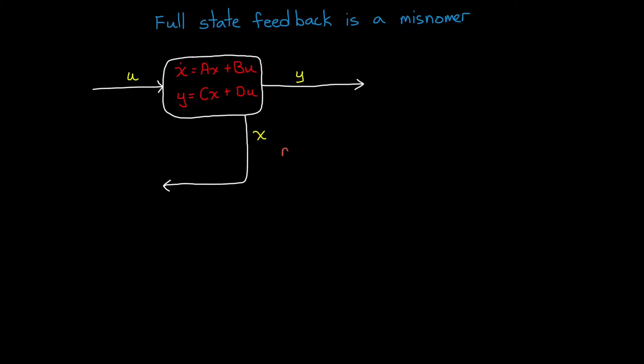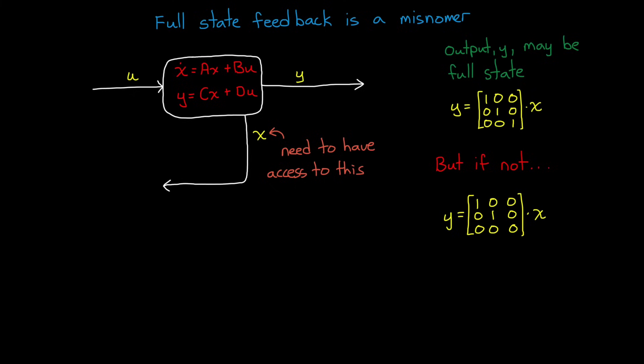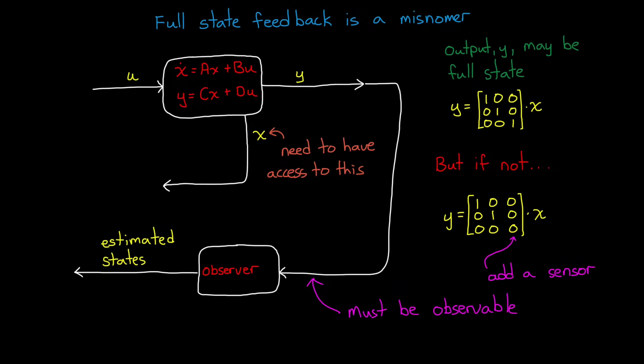You have to have some kind of access to all of the critical states in order to feed them back. The output Y might include every state, in which case you're all set. However, if this isn't the case, you will either need to add more sensors to your system to measure the missing states, or use the existing outputs to estimate or observe the states you aren't measuring directly. In order to observe your system, it will need to be observable. And similarly, in order to control your system, it needs to be controllable. We'll talk about both of those concepts in the next video.